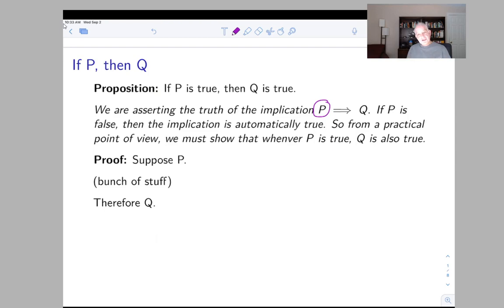If the hypothesis is true, however, then the implication is only true if the conclusion is true. So when trying to prove the truth of a statement of the form if P then Q, as a practical matter, we just assume P is true and try to conclude Q. So proofs of this form look very standard. They have the proposition, and we write proof, and then we say suppose P is true. And then we write a bunch of stuff. And at the end, we are able to conclude Q.